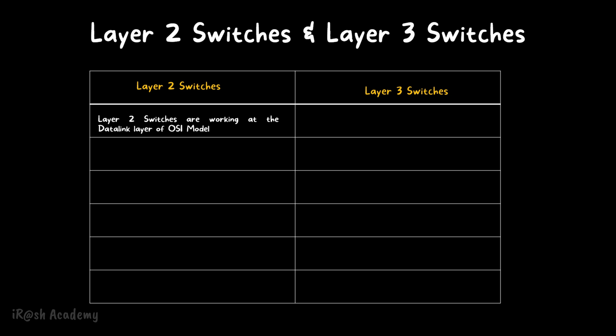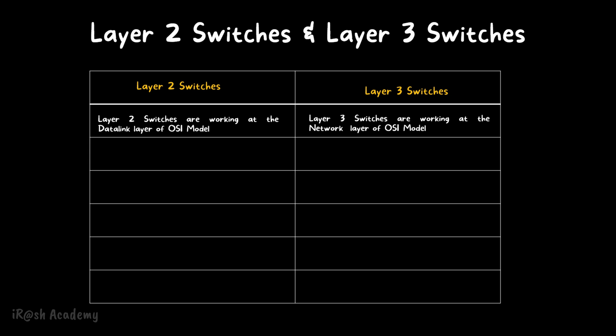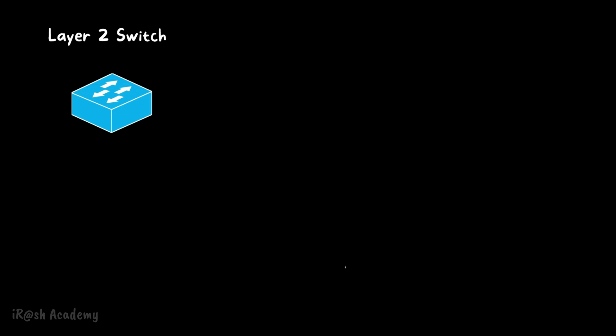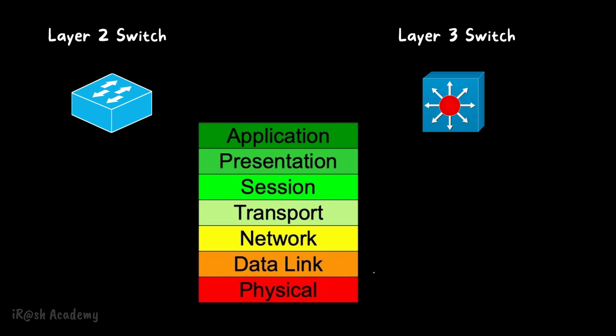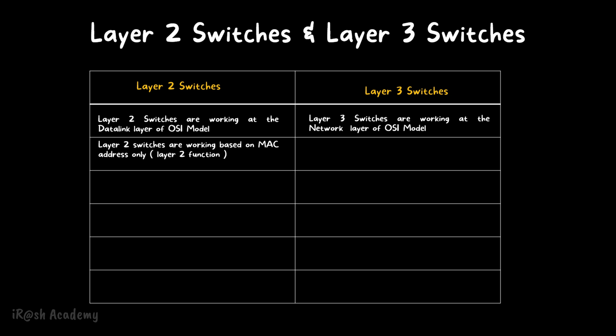Point number one: layer 2 switches work at the data link layer of the OSI model, but layer 3 switches work at the network layer of the OSI model. The OSI model is a conceptual framework used to describe the function of a networking system. It contains seven layers, each with its own function and protocols. Layer 2 switches work at the data link layer and layer 3 switches work at the network layer of the OSI model.